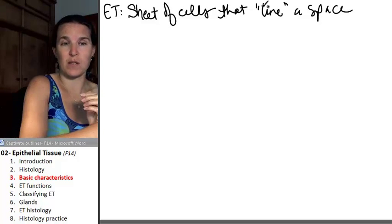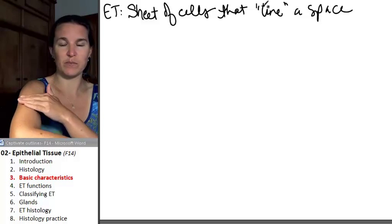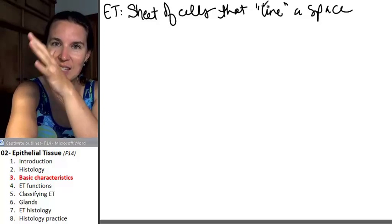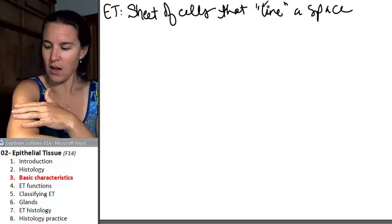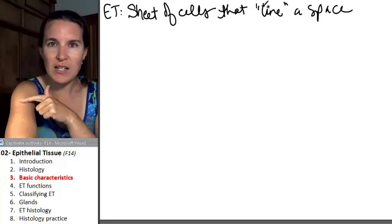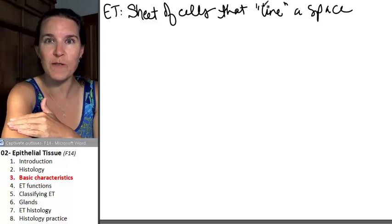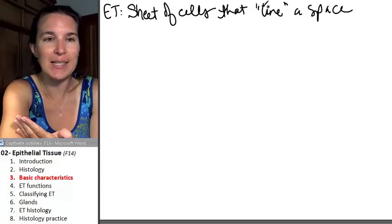Think about this. My face, my skin is lining a space. This is a space. Do you agree? So guess what kind of tissue is found on the superficial edge of my skin? It's going to be epithelial tissue.